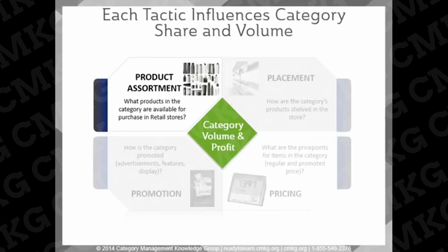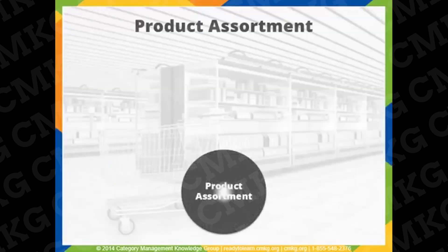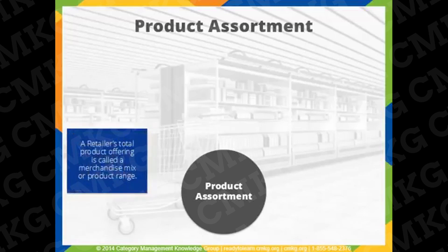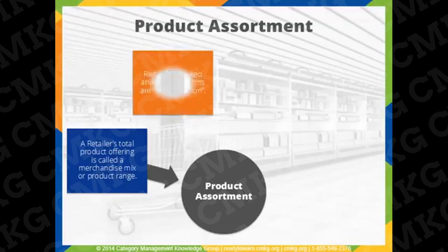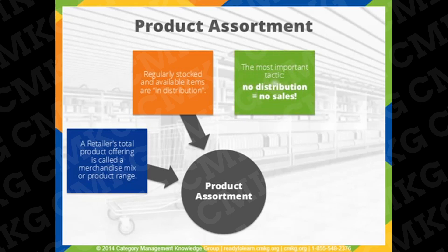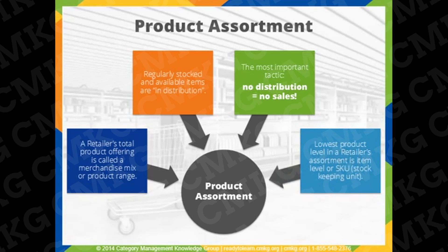We'll start with product assortment. Here are some basic things to know about product assortment. A retailer's total product offering is called a merchandise mix or product range. If a product is available for purchase, it's often referred to as in-distribution. Distribution, or product availability, is the most important tactic — if a product is not available for sale in the store, it simply will not sell. The lowest level of detail in a retailer's assortment is the item level, or SKU level, which stands for stock-keeping unit.